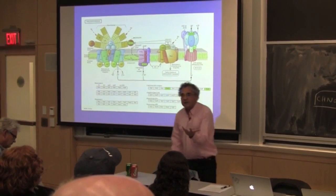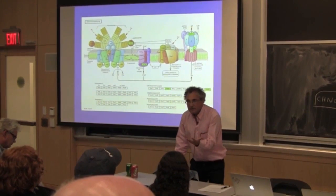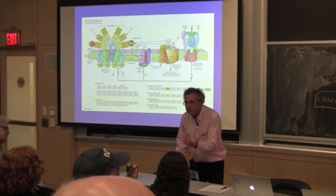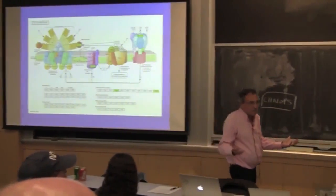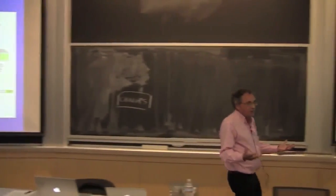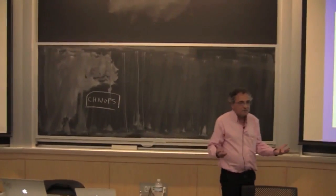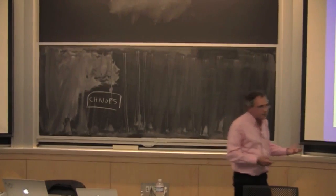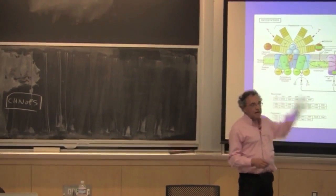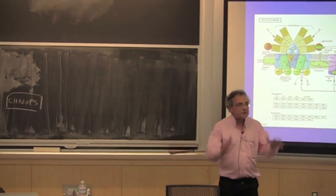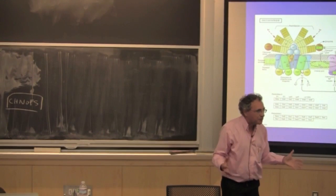Why didn't we just make hydrogen to begin with? What would have happened if we had? It would have escaped — it would have diffused out of the cell so quickly the cell couldn't get a handle on it. Cells that make hydrogen are doing something else for metabolism.